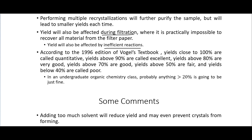According to a 1996 textbook, yields close to 100% are called quantitative; above 90% are excellent; about 80% are very good; 70% are good; 50% are fair; and below 40% are poor. But for organic chemistry students in a sophomore-level class, if your experiment gives you something greater than 20% you're probably doing just fine — these higher benchmarks are more for professional organic chemists.